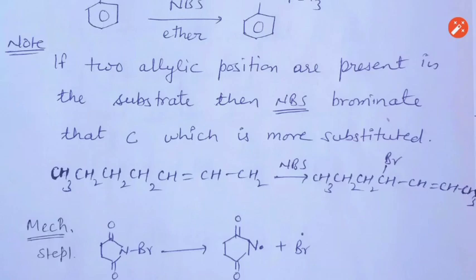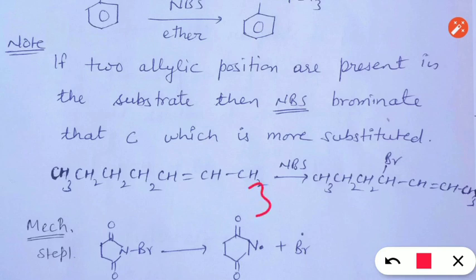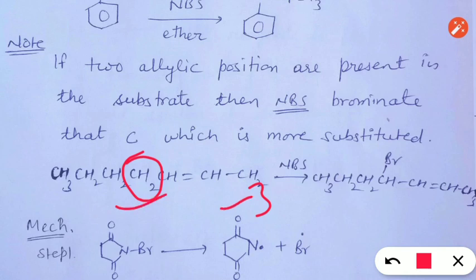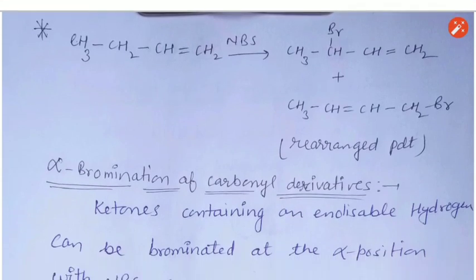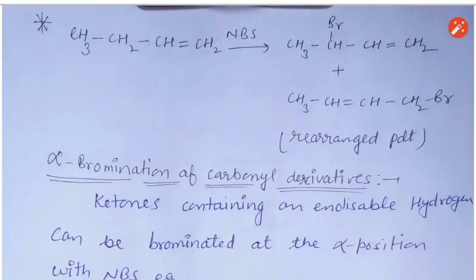If a compound has two possible allylic hydrogens, then the more substituted carbon will be brominated with N-Bromosuccinimide. Here, there are two allylic carbons, but the methylene carbon is more substituted than the methyl carbon, so bromination takes place at the methylene carbon.